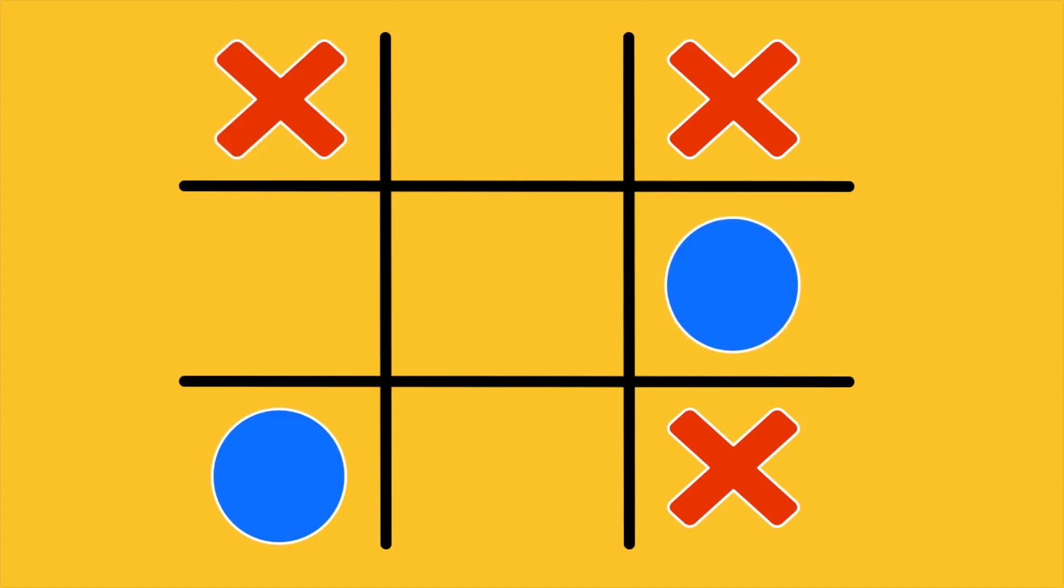And then you put a cross in the last free corner. You have as many as 2 winning combinations. And your opponent has only one move to spare, so you are a guaranteed winner.